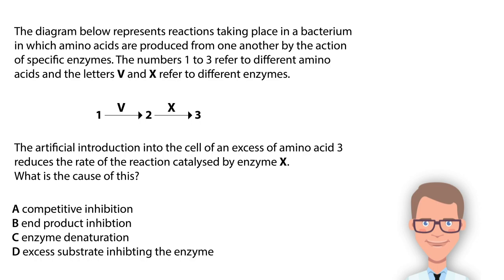Let's have a look at question number four from red spot. In this question we are given a reaction in which product one converts into product two in the presence of enzyme V, and product two converts into product three in the presence of enzyme X. When we add excess product three, it will give a signal that we have sufficient end product and no more is required, which will reduce the rate of our reaction. So excessive end product inhibits the reaction. The correct option is option B, end product inhibition.